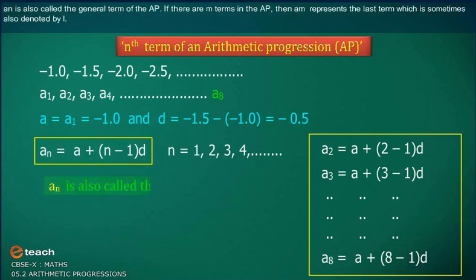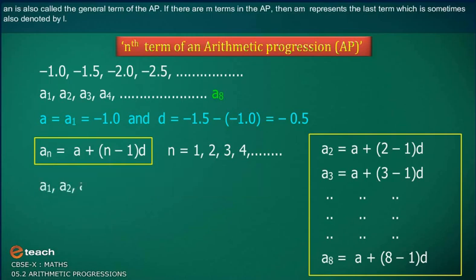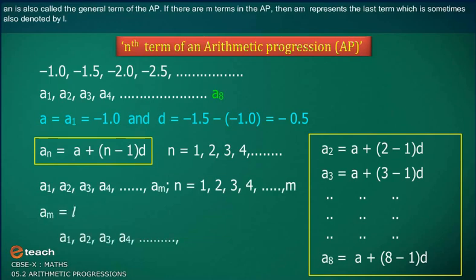AN is also called the general term of the AP. If there are M terms in the AP, then AM represents the last term, which is sometimes also denoted by L.